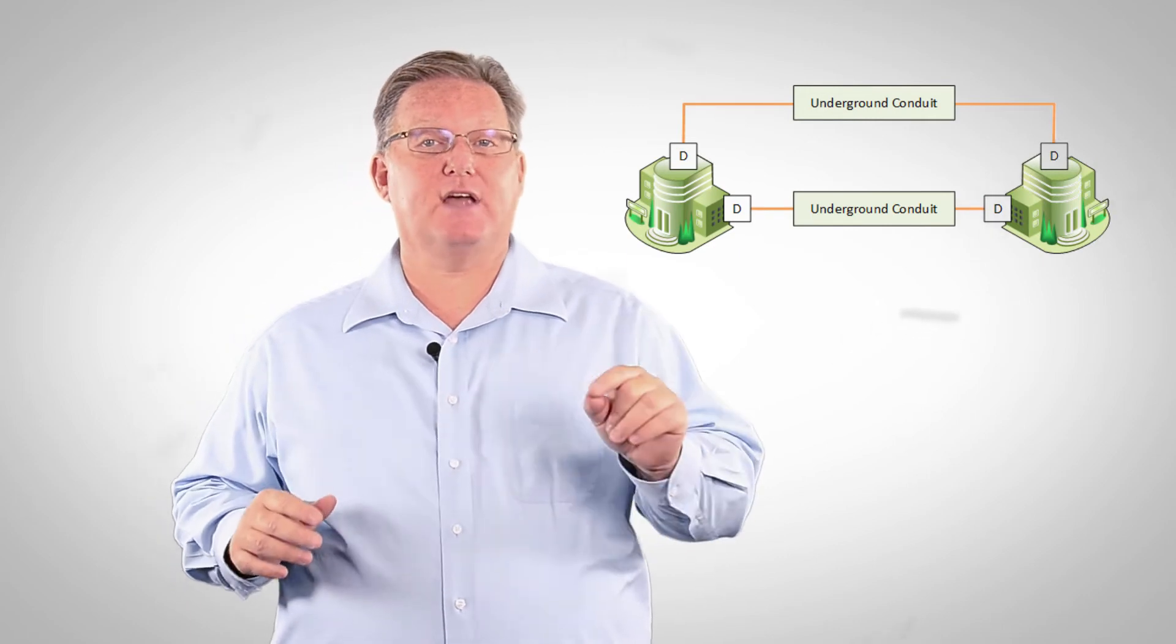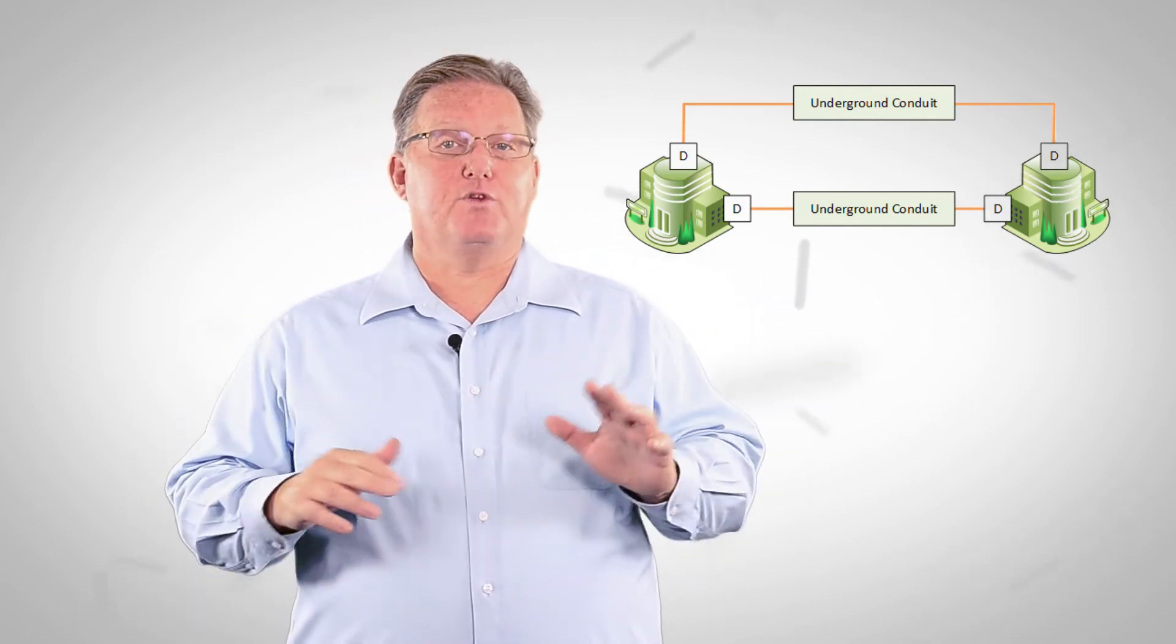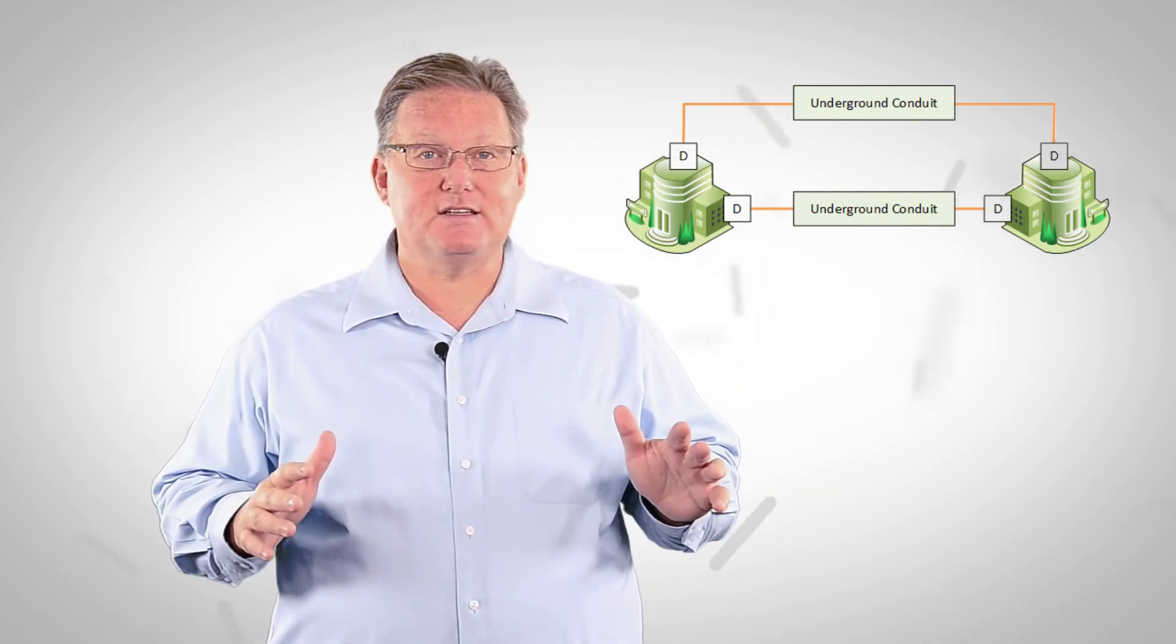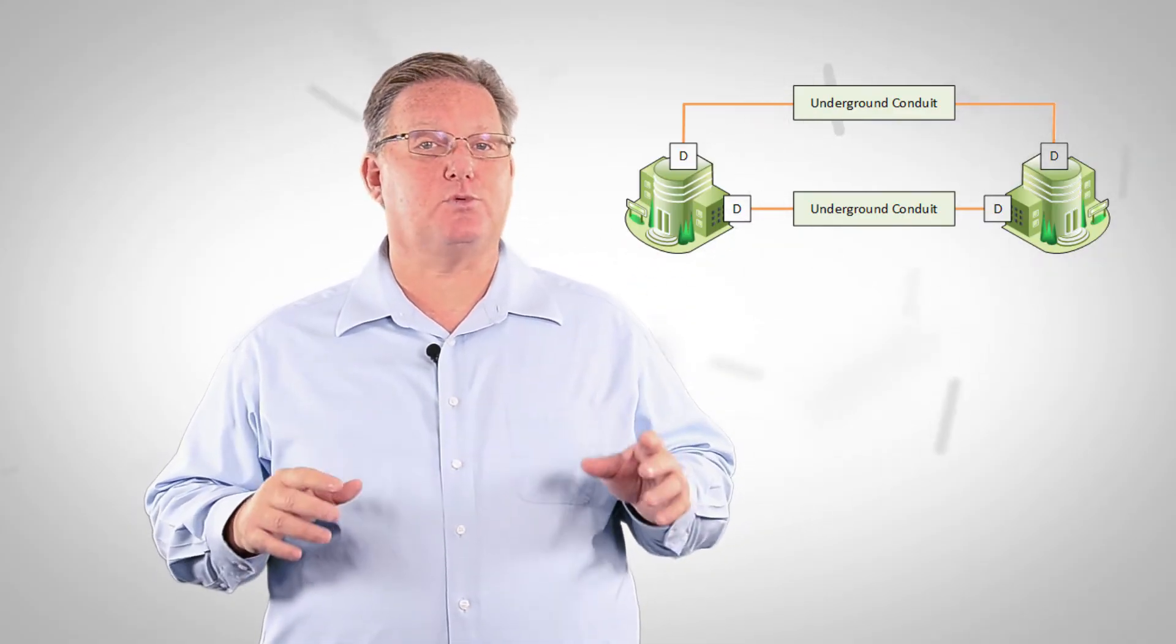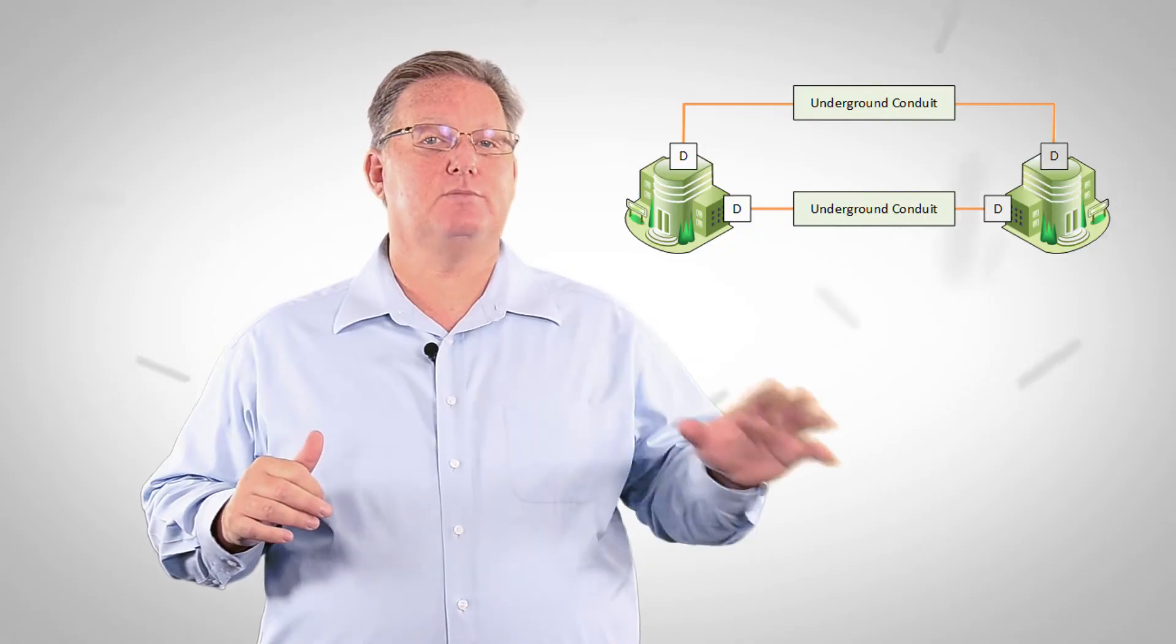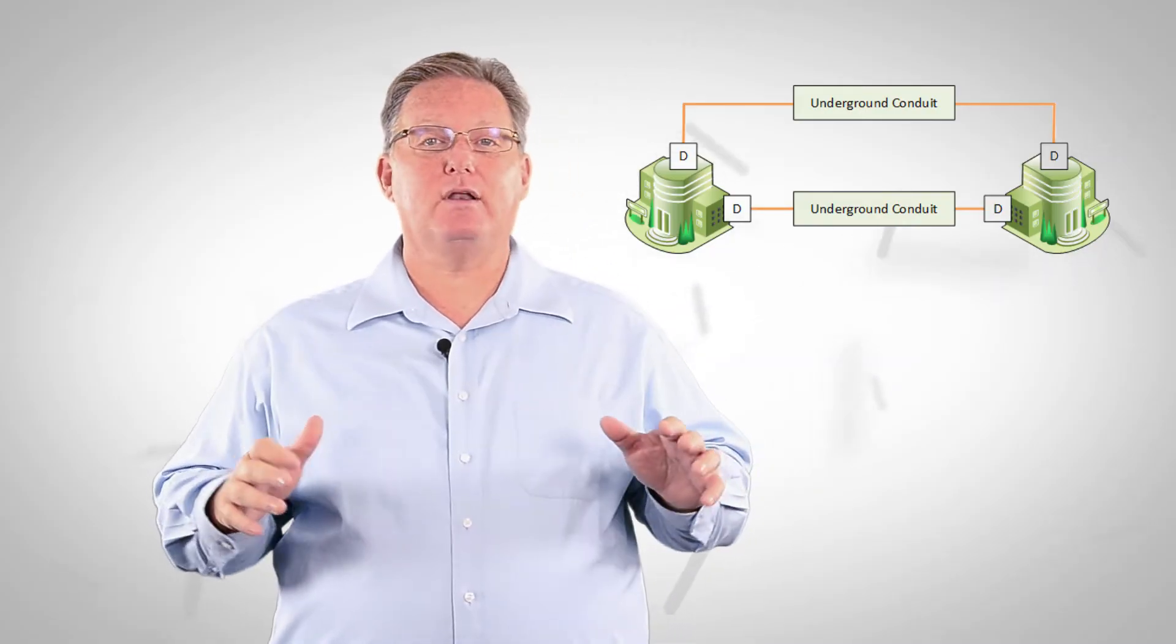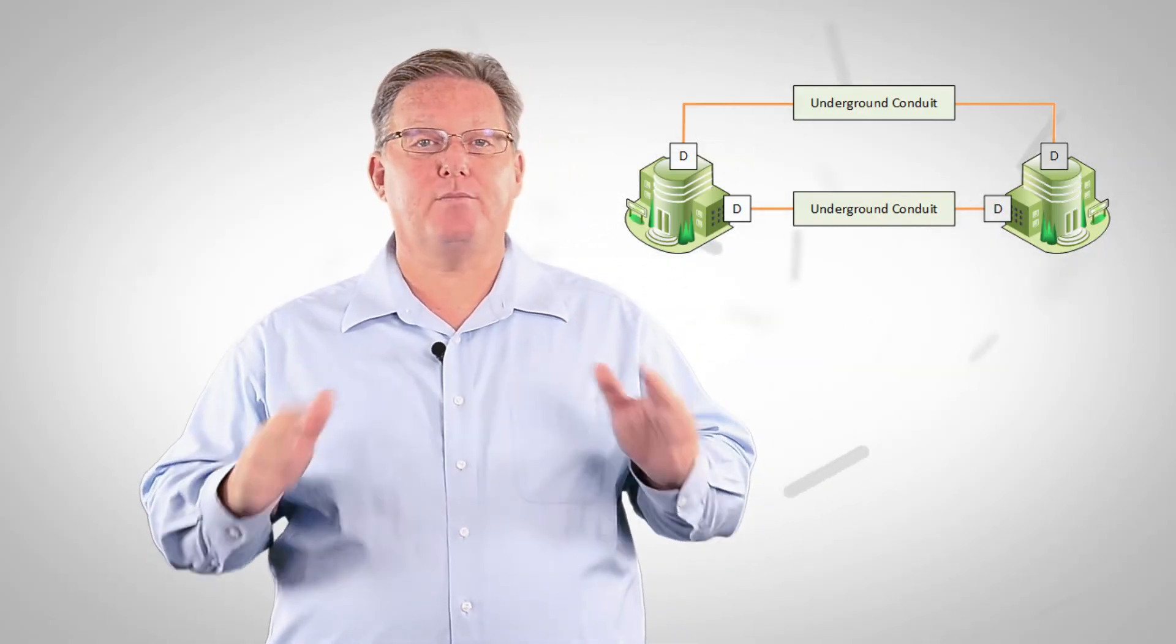First, we create a second underground pipe. For this to be effective, don't lay them next to each other. The paths have to be separated by as much distance as possible and enter on separate sides of the building. By entering in different places, we've created two physically separate demarcation points. Lose any one and there's always an alternate path.